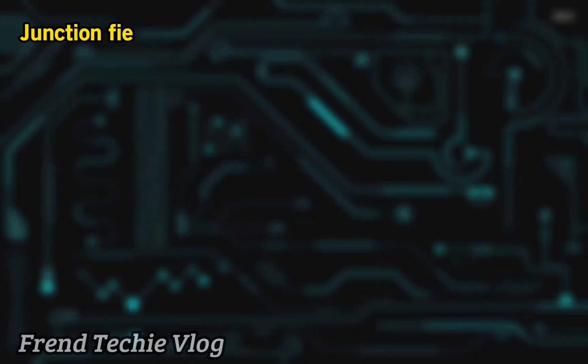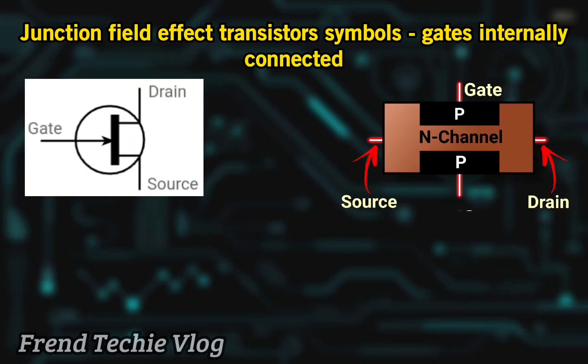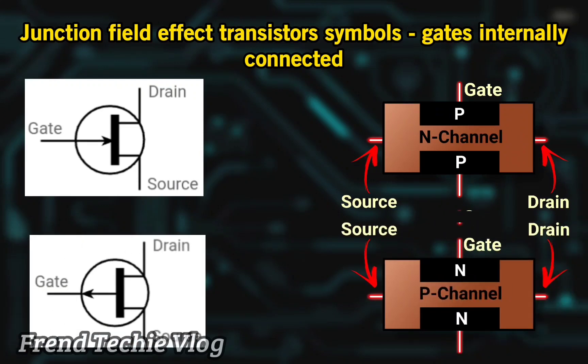Junction field effect transistor symbols, with gates internally connected: this is for the N-channel, and this is for the P-channel.